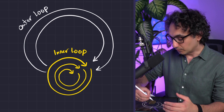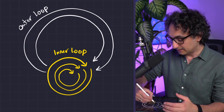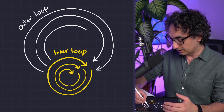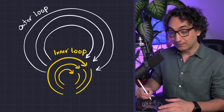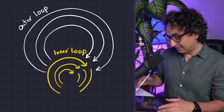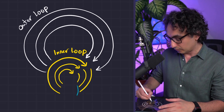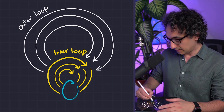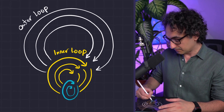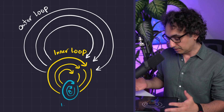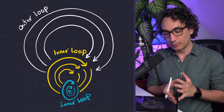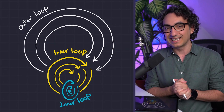The same thing happens again — we run the inner loop completely, and once it's done we run one more iteration of the outer loop. Of course we can keep nesting loops inside another loop, so we could have a very small loop inside a middle one. This is exactly what we mean by a loop inside another loop. Now let's see how we build it.